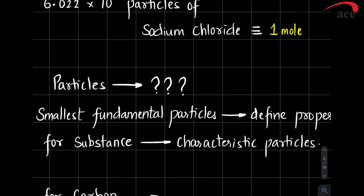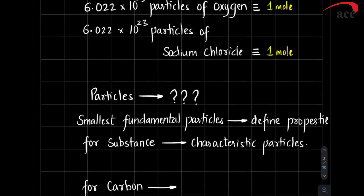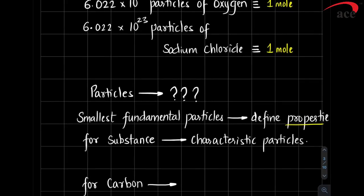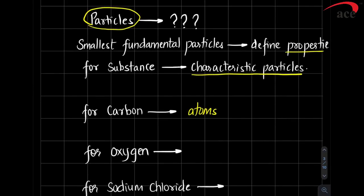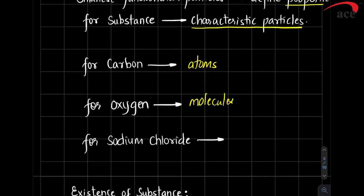When somebody says 'particles' in chemistry, it can cause confusion. A particle is the smallest fundamental part of a substance which defines all the characteristic properties of that substance. For carbon, those particles are atoms. For oxygen, that fundamental particle is molecules. For sodium chloride, that fundamental particle is ions. So if you specify a substance, you must also specify the type of particle.